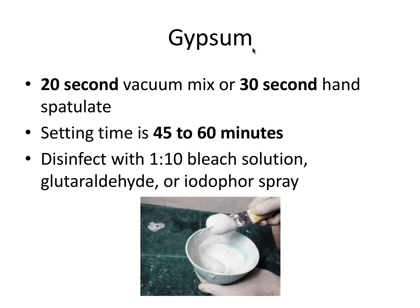When mixing gypsum, we typically take about 20 seconds using a vacuum mixer, or 30 seconds if mixing by hand with a spatula in a mixing bowl. The setting time for gypsum is approximately 45 to 60 minutes, though fast-set type one impression plaster sets in about 5 to 10 minutes. Other forms of gypsum can take up to an hour to fully set — contrast this with alginate, which sets in only 3 to 4 minutes. After pouring and letting it set, you can disinfect with a bleach solution, glutaraldehyde, or iodophor spray.